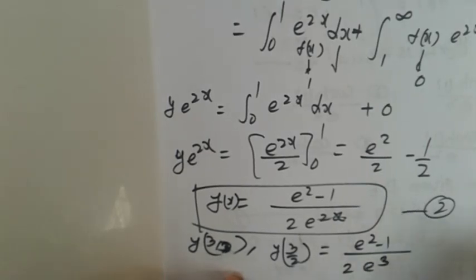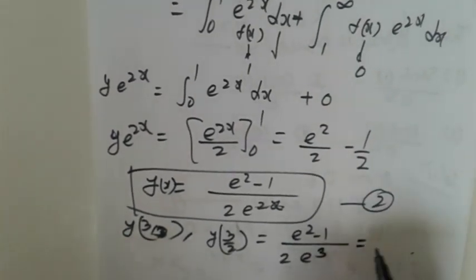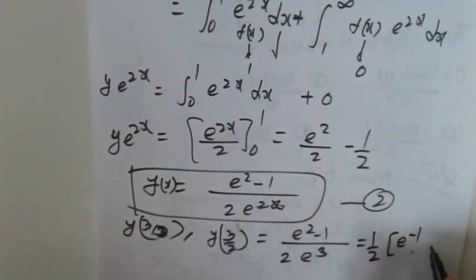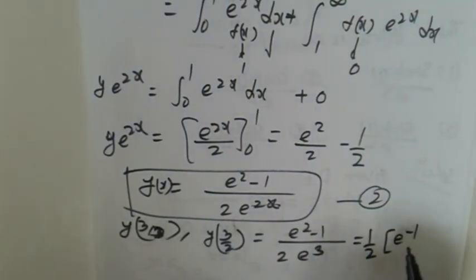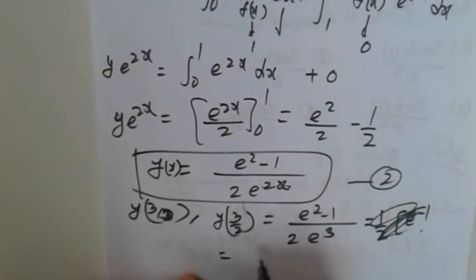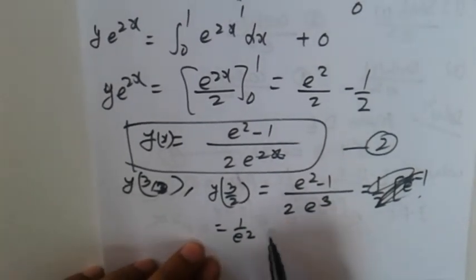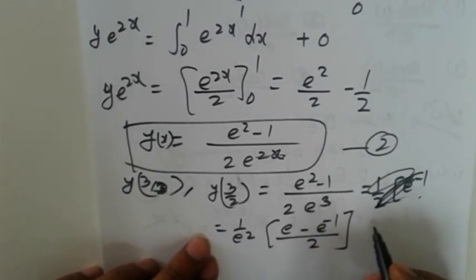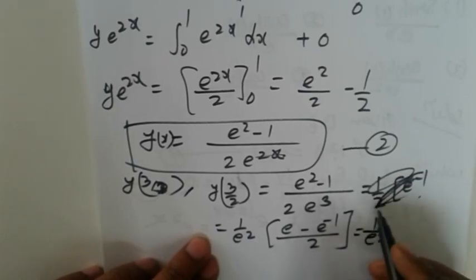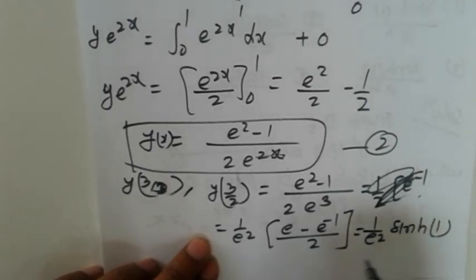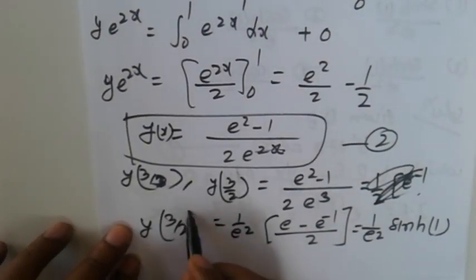Simplifying, we get 1/2 times e^(-1). Taking 1/e^2 as common, this becomes (e - e^(-1))/2 times 1/e^2, which is sinh(1)/e^2.